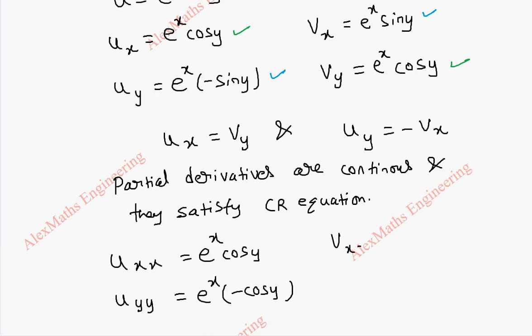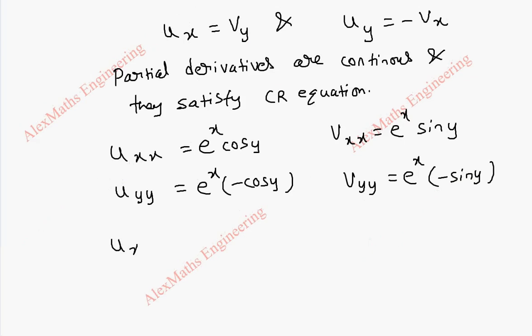Again vxx is e^x, derivative of e^x, and sin y stays as it is. And vyy also, e^x is a constant kept as it is, and derivative of cos y is minus sin y.